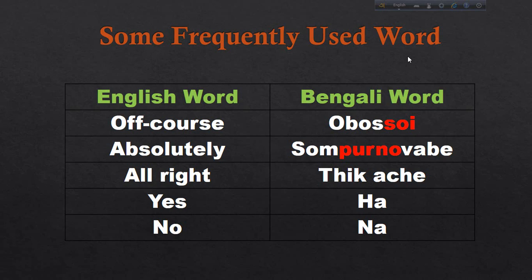'Alright' means 'thik ache'. 'Yes' means 'haan'. 'No' means 'na'. To recap: 'aboshoy' means 'of course', 'shampurno bhabe' means 'absolutely', 'thik ache' means 'alright', 'haan' means 'yes', and 'na' means 'no'.